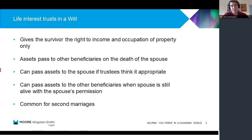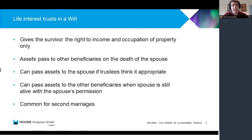So take, for example, someone putting their will together and they say: I would like to make sure that my second spouse is comfortable and has such funds that they need to carry on living as they would, but also I want to make sure that what's left over goes to my children from my first marriage. Then you can create a life interest trust in the will. That gives the surviving spouse the automatic right to stay in the house they shared, as well as income generated on capital assets. But on the death of the second spouse, the assets pass to the children from the first marriage.